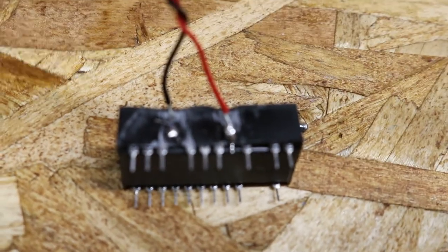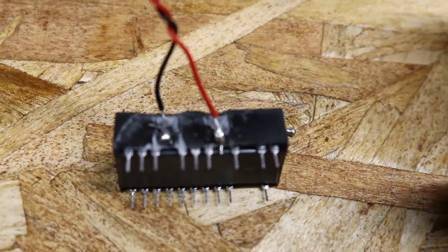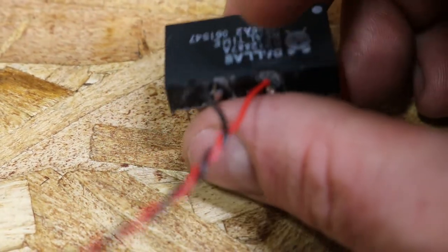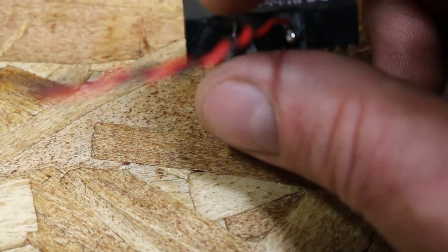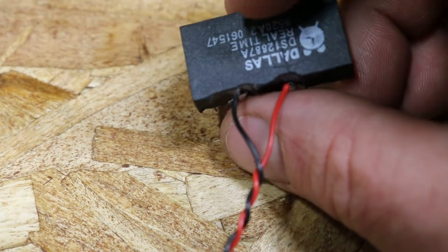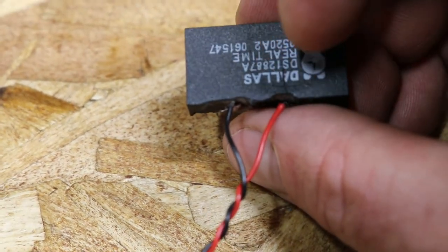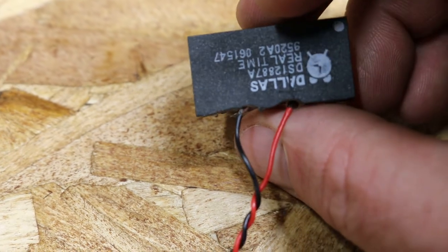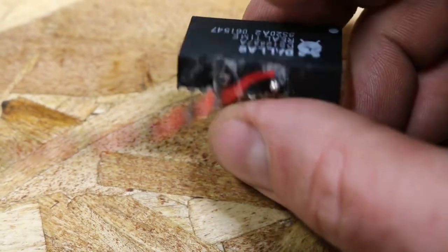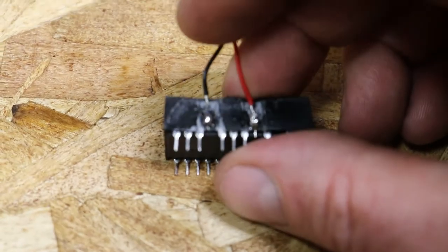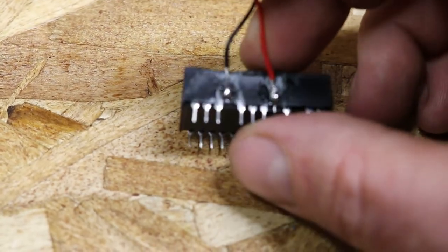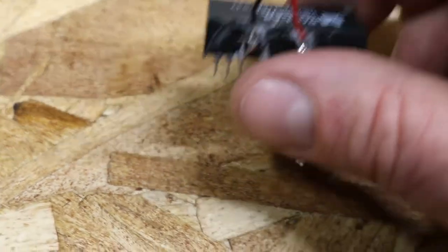Obviously the red one's positive, black one's negative. I do that on purpose so that way if I have to replace it you know which to hook up to your battery. I always mark it right there at the top too because it can get confusing.